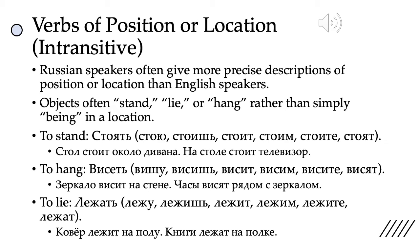Next we have висеть — to hang. This is intransitive, so this is when something is hanging somewhere. The conjugation is вишу, висишь, висит, висим, висите, висят — second conjugation. Note the consonant mutation in the first-person singular, the я form, but not in the other forms. We could say зеркало висит на стене — the mirror is hanging on the wall. Часы висят рядом с зеркалом — the clock is hanging next to the mirror. Note that clock in Russian is always plural.